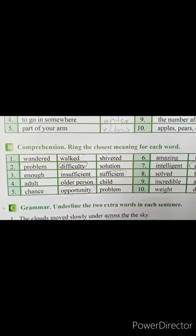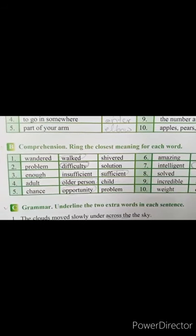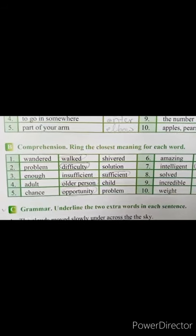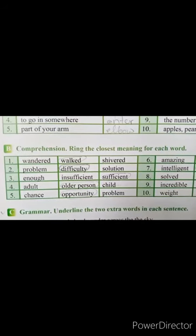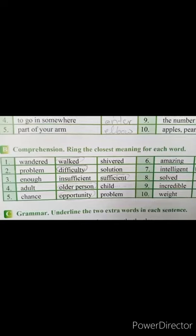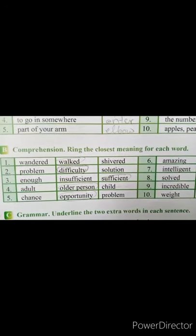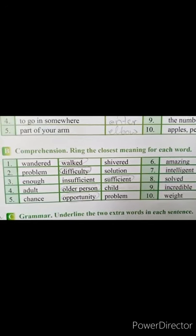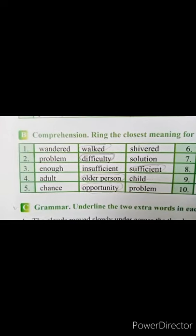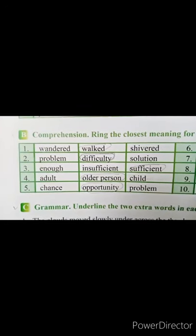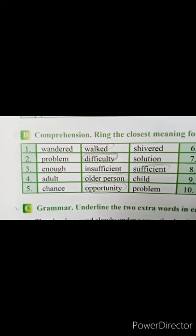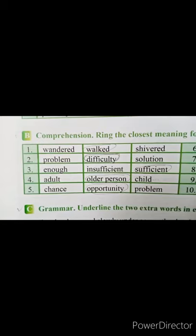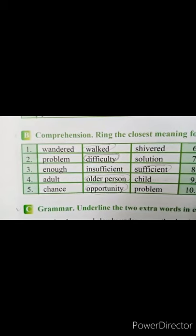Students, we are moving towards exercise B on page 18. This is comprehension — ring the closest meaning for each word. آپ کو words given ہے اور اس کی meanings دی گئی ہے — جو closest meaning ہے جو بالکل اس کے ساتھ match کرے، آپ نے اس کو ring کرنا ہے.